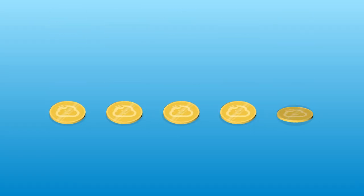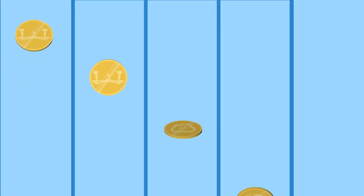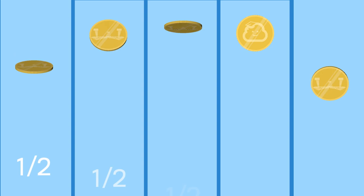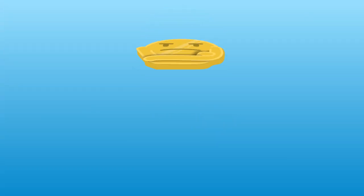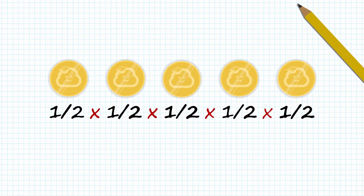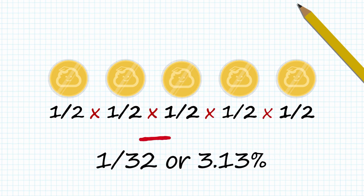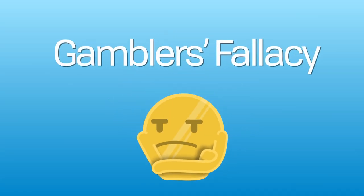It is possible to get heads 5 or even 10 times in a row, just very unlikely. Each coin toss is independent, so it will always have a 1 in 2 chance of heads. The coin doesn't care. By multiplying the individual probability by the amount of trials, we get the answer. Expecting the coin to care about your pattern is called the gambler's fallacy.